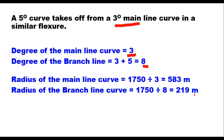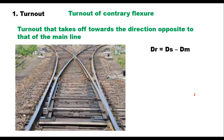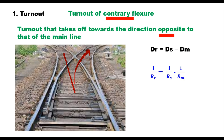A turnout can also be in the opposite direction of the main line, and that is called the turnout of contrary flexor. Here the branch line takes off in the opposite direction of the main line. The resultant degree of the turnout is ds minus dm, where dm is the degree of the main line curve and ds is the degree of the turnout taken off in the opposite direction. By the same formula, the radius of the resultant turnout is rm × rs / (rm − rs).